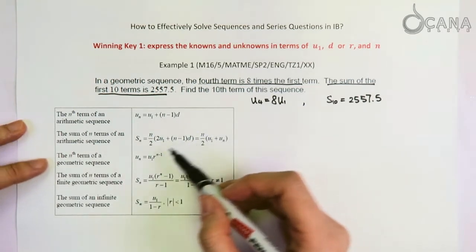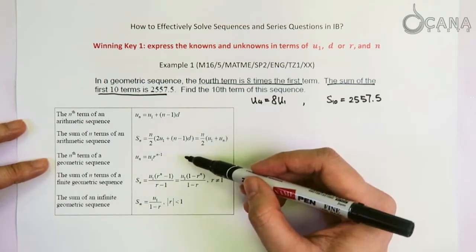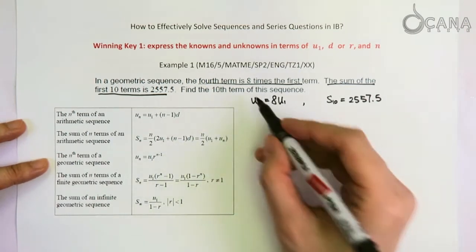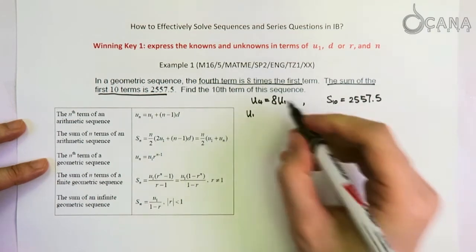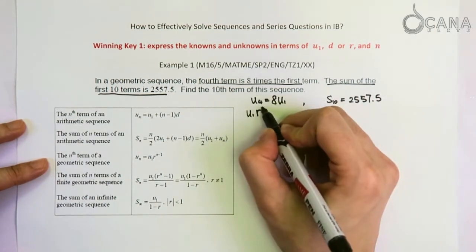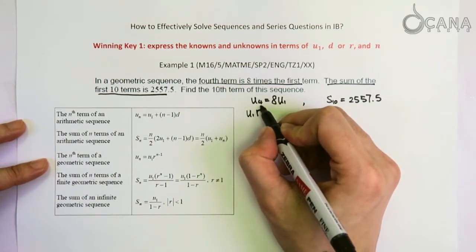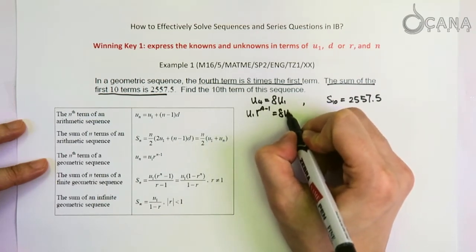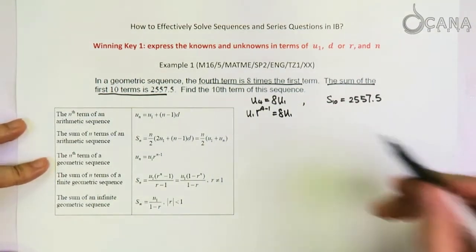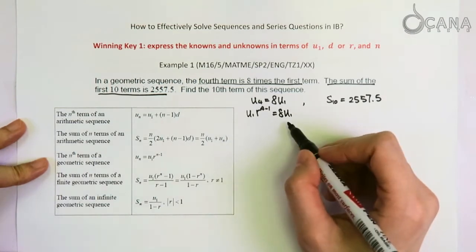Since this is a geometric sequence question, we're going to express U4 using this formula, which is U1 times the common ratio to the power of N, which is 4 in this case, minus 1, equals to 8U1. Now we want to simplify this equation a little bit more.